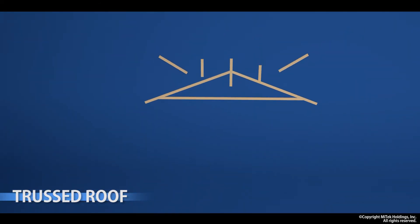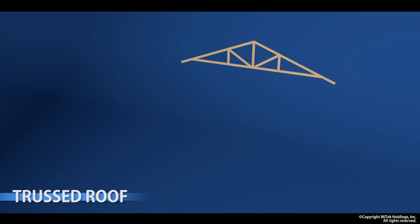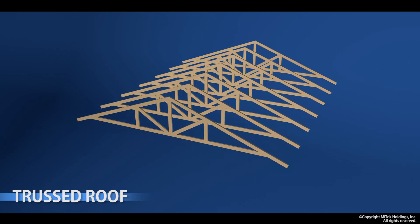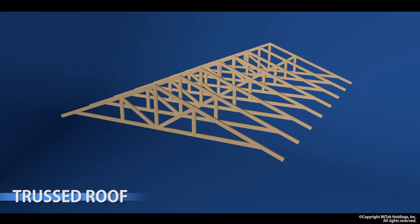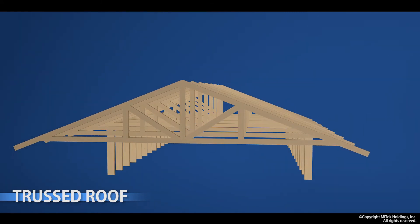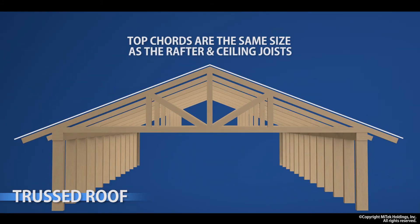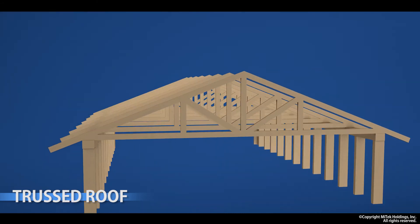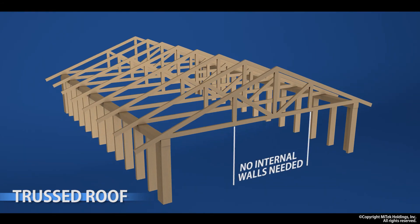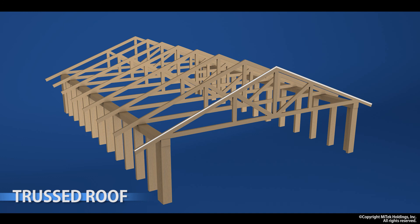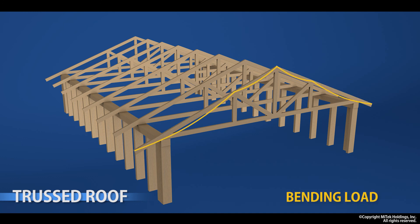Typically, if we were to span using trusses, there are a number of advantages. First, because of the kit-set nature, the speed of construction is quite obvious. Secondly, in most cases the timber sizes remain exactly the same. Thirdly, we have the ability to avoid the use of internal walls where required. However, there is a big difference in engineering performance — the top chord still takes the same bending load but also inherits a compression load, so the designer takes note of both compression strength and bending strength when designing the truss.